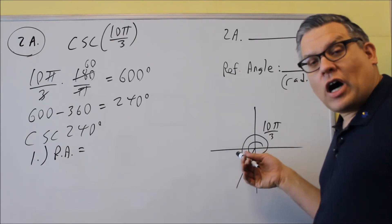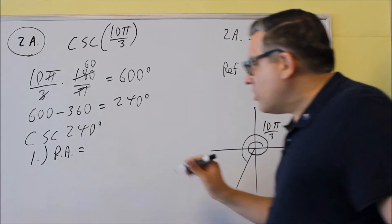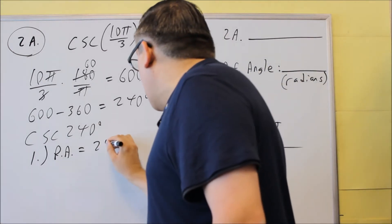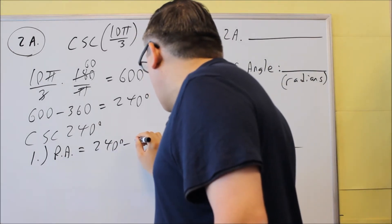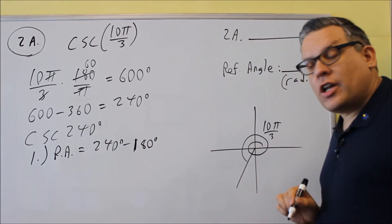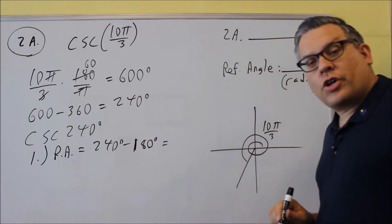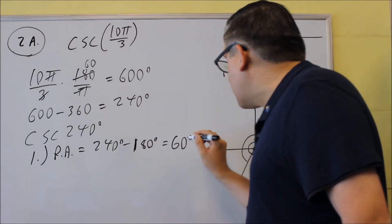If you're in the third quadrant, that means you're going to use theta minus 180. So we've got to do, the theta is the angle we got, 240, and we're going to subtract from this 180 degrees. Okay, so it's theta minus 180 is that one. Now what we're left with here, 240 minus 180, is a reference angle of 60 degrees.